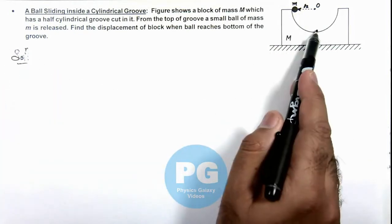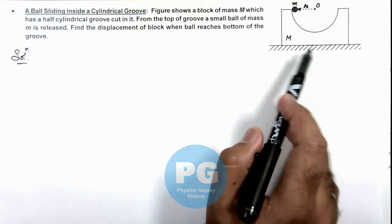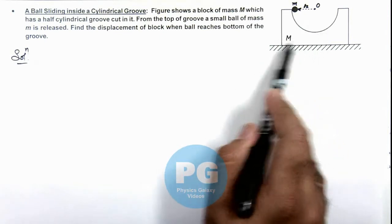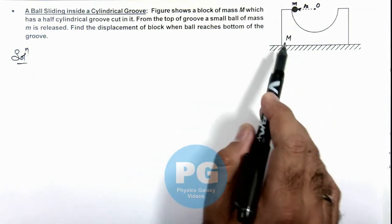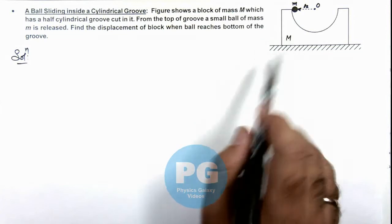Now in this situation when the ball reaches the bottom of groove, as it is moving toward right, the block must move toward left because the center of mass must be horizontally at rest as no external force is acting on this system.